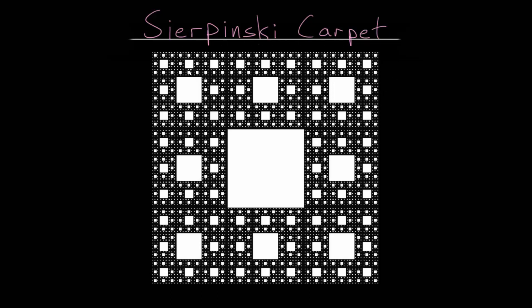And this fractal is created from a square, where that square is divided into nine equally sized smaller squares, and then the middle of those squares is removed. And that would be the first step.